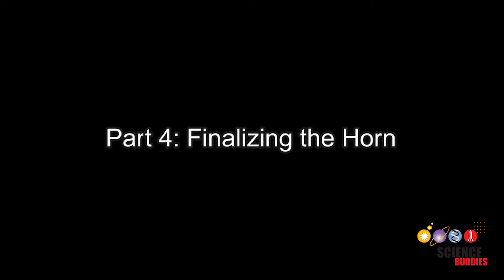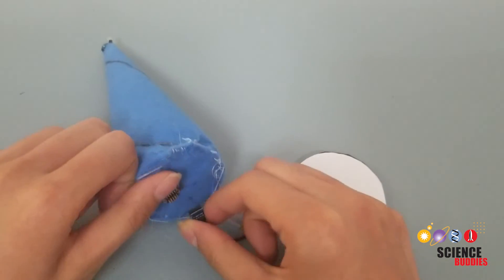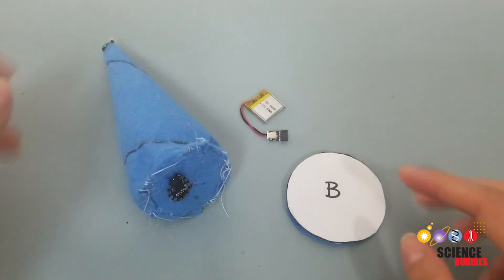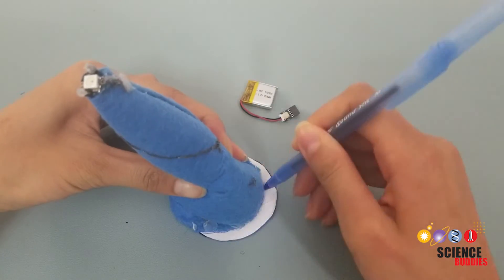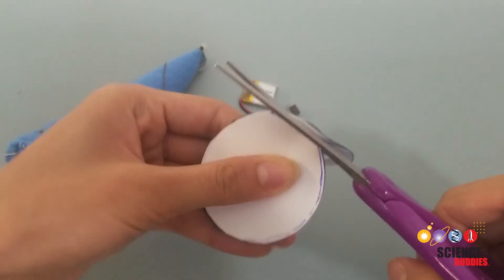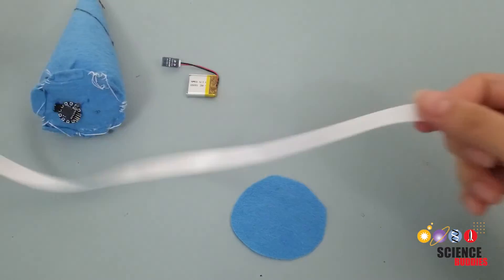Part 4, Finalizing your horn. For now, you can unplug your battery to conserve energy. To finish your unicorn horn, trace the bottom of your final horn onto the paper side of felt piece B. Trim down the felt so that it is slightly bigger than the trace shape. Remove the guiding paper piece.